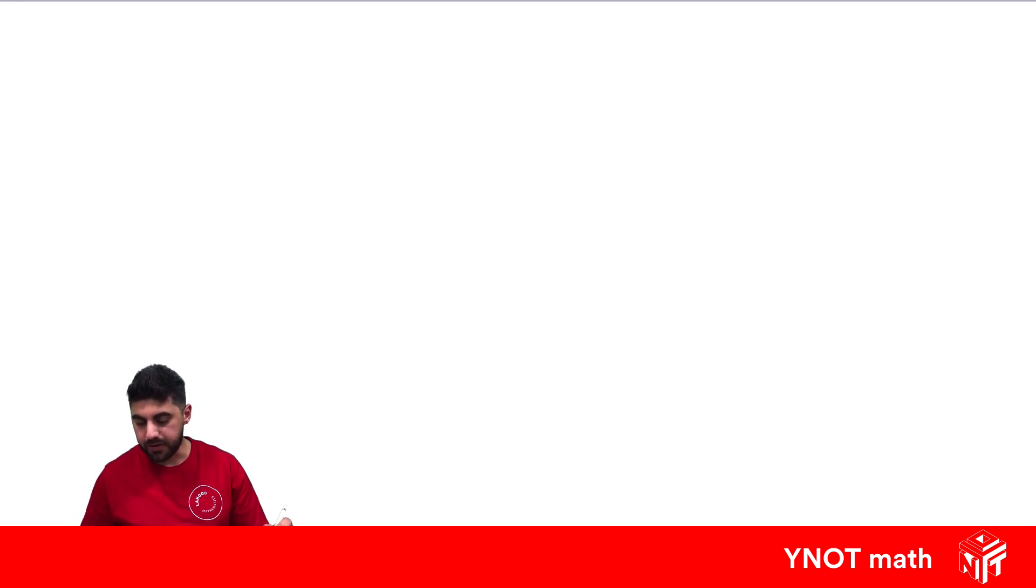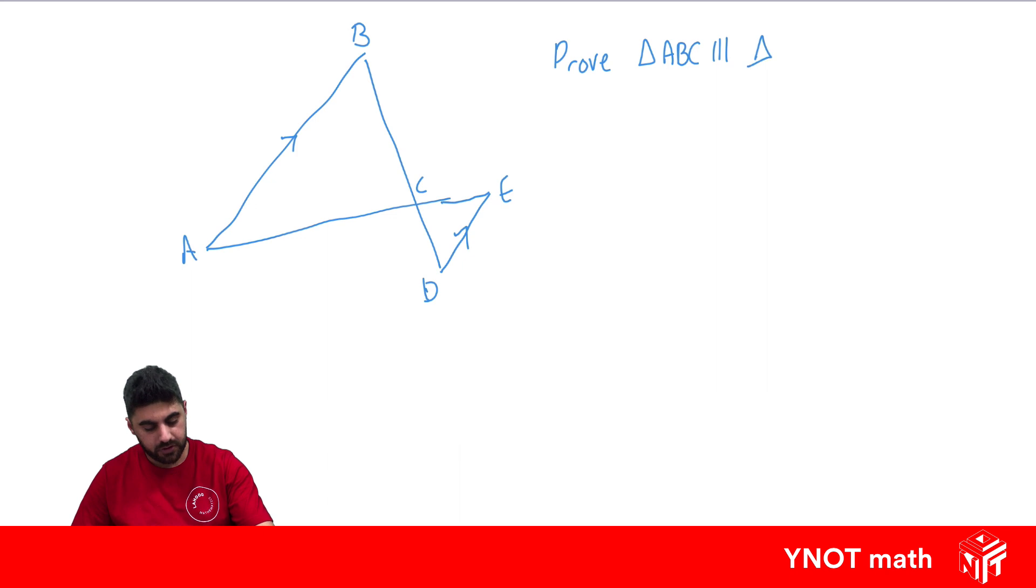Let's have a look at an example on how we can apply this. Points A, B, C, D, and E. All we know is this side is parallel to this side, and we want to prove that triangle ABC is similar to triangle EDC. When you're not given any information about the sides, it's very likely that the triangles are going to be equiangular.